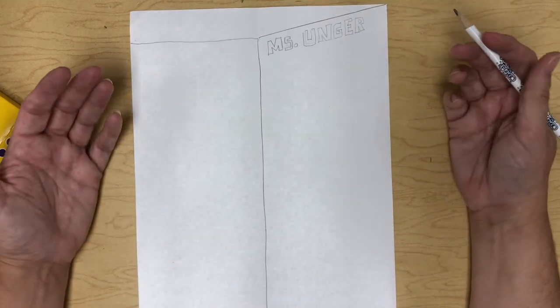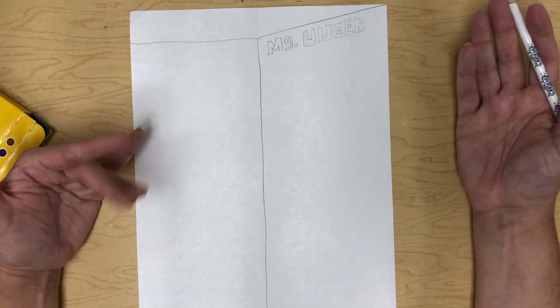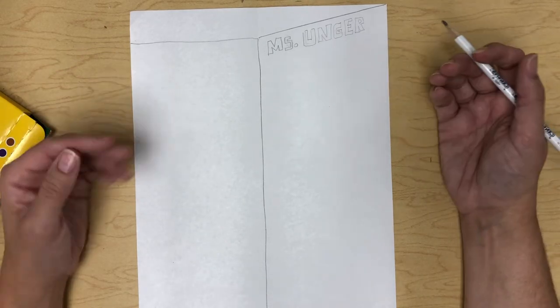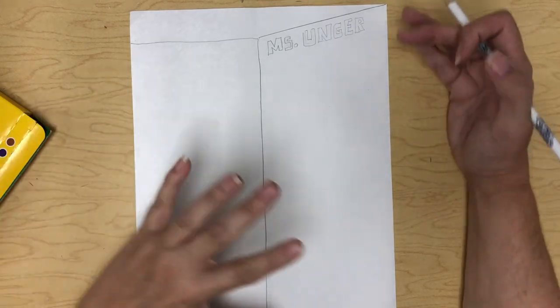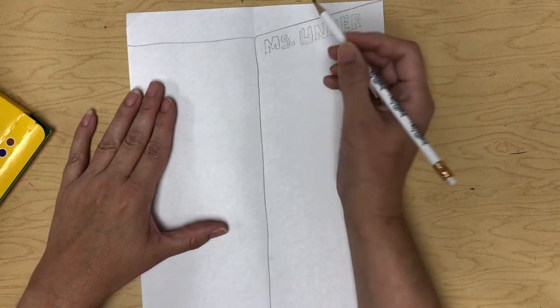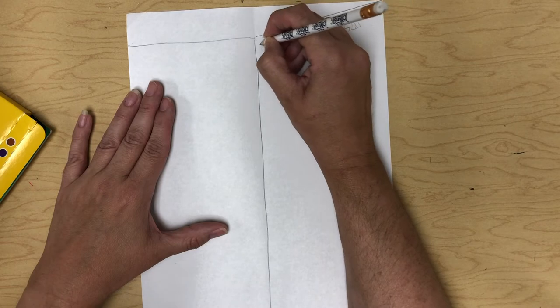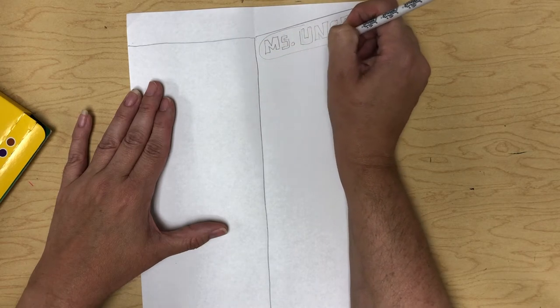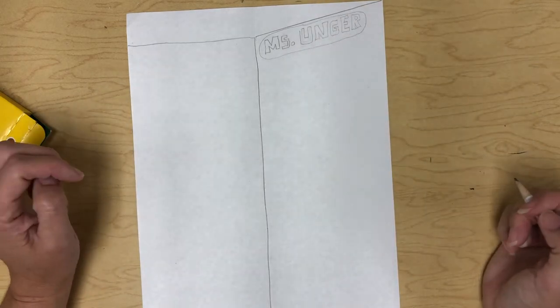Now, sometimes lockers have stickers in them. I know that you might not be allowed to do that at school, but we're going to pretend like this is a locker that you can put stickers in or magnets and things like that. So to make this look more like a sticker, I can actually draw a shape around it. Maybe an oval or maybe a rectangle and I can make it look a little bit more like it's a sticker.